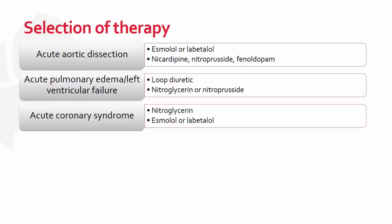In patients presenting with an acute coronary syndrome, nitroglycerin is an option, but remember to ensure the patient has not recently received a phosphodiesterase inhibitor, as the combination can lead to profound reductions in blood pressure. Beta blockers such as esmolol or labetalol are also an option. However, we would want to avoid esmolol or labetalol in patients with evidence of heart failure or LV dysfunction, as well as those with bradycardia or second or third degree heart block.